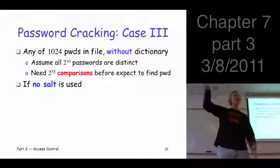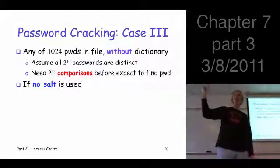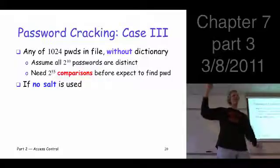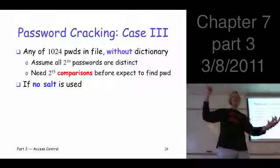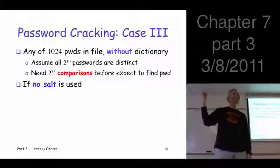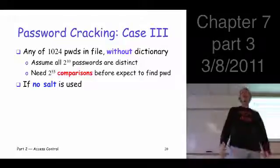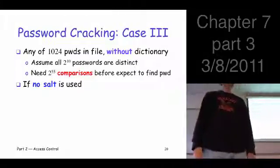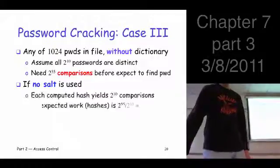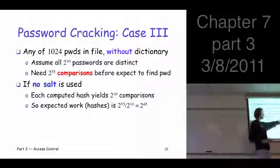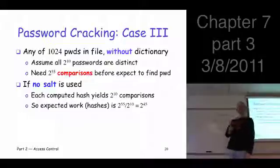If you find it, you're done. If you don't, grab the next guy off the list. Hash it. Compare it to all 1,024. How much work? One plus one. I've done two. How many comparisons? Another 1,024. So you get it? We're doing 1,024 comparisons for each unit of work that we do. So how much work do I need to do before I get my 2 to the 55 comparisons? Each hash gives us 2 to the 10 comparisons. So I only need to do 2 to the 45 hashes to get the 2 to the 55 comparisons.